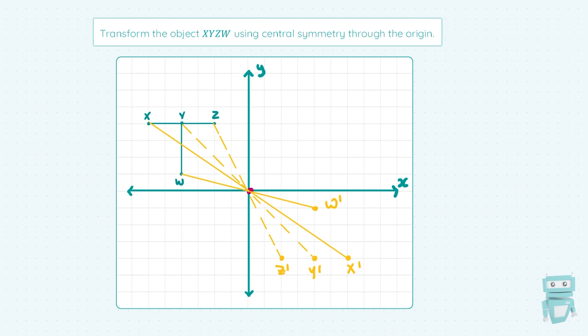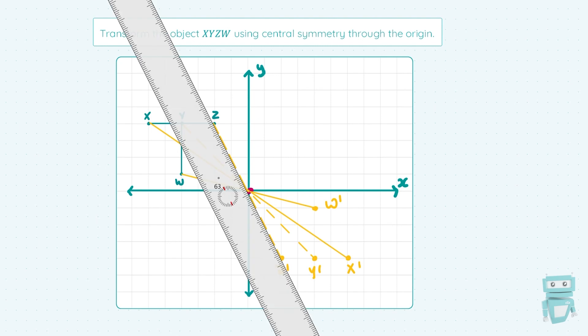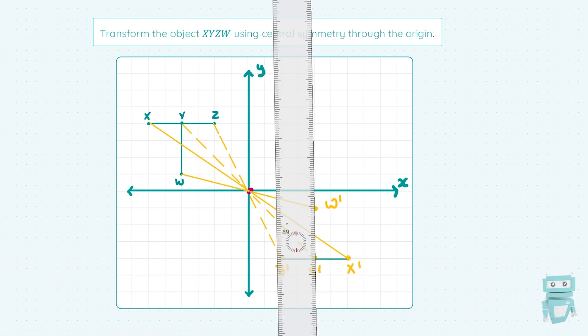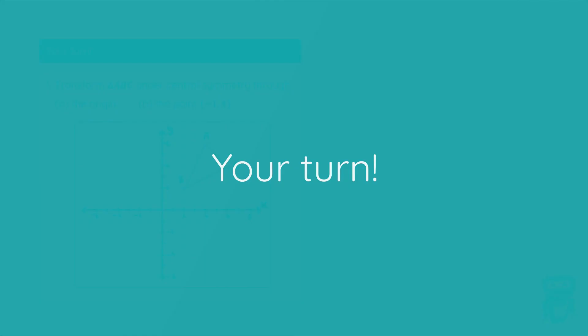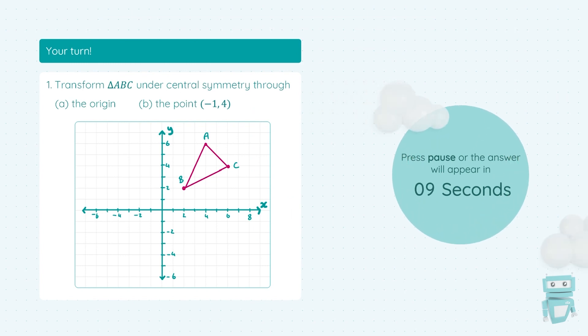Now we're good to go — we're going to join up our dots to make that T shape. The original T shape of the object has been flipped upside down, so we're drawing an upside down T shape when we join our dots. And there we have our image of the object through central symmetry at the origin. To follow the definition of central symmetry once more: we reflected the object through the point, and the image of the object appears flipped upside down. Now it's your turn to try this out. Pause the video here, copy down this question, and check in with the solution when it appears on screen.